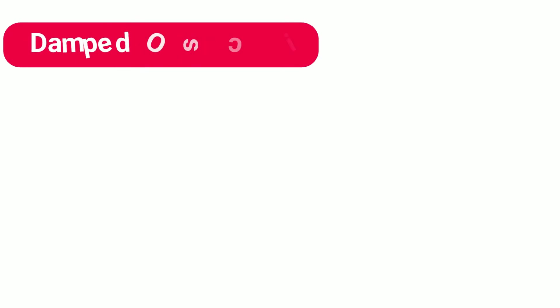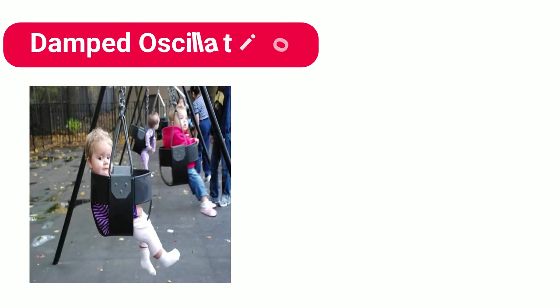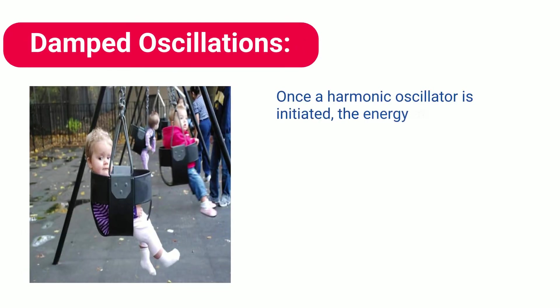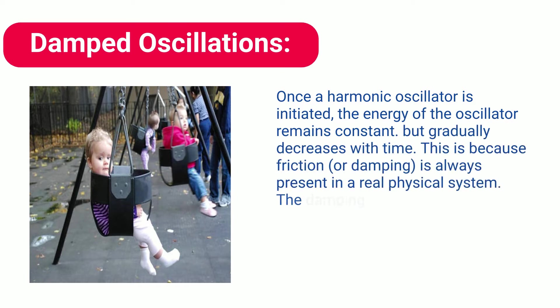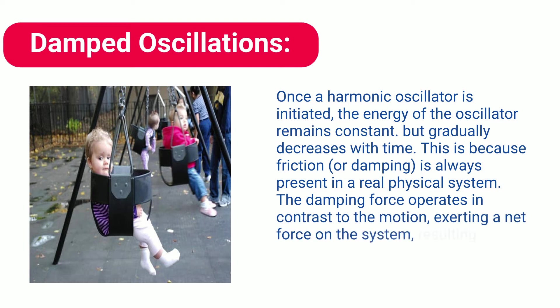Damped Oscillations. Once a harmonic oscillator is initiated, the energy of the oscillator remains constant, but gradually decreases with time. This is because friction or damping is always present in a real physical system. The damping force operates in contrast to the motion, exerting a net force on the system, resulting in energy dissipation.